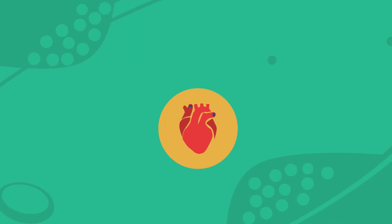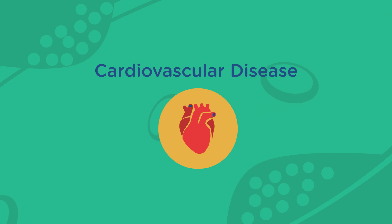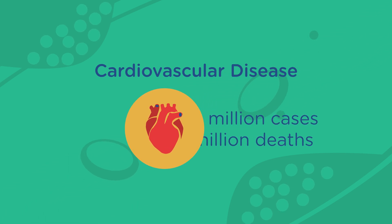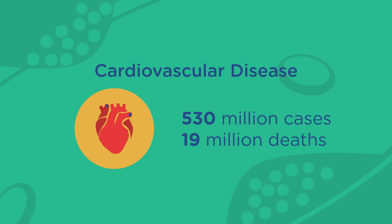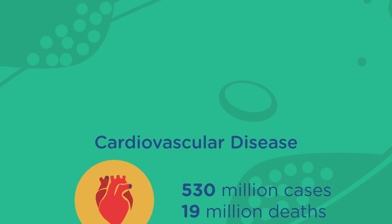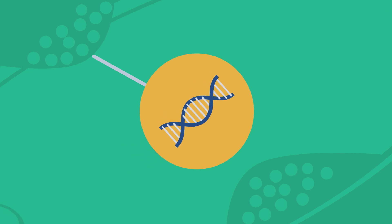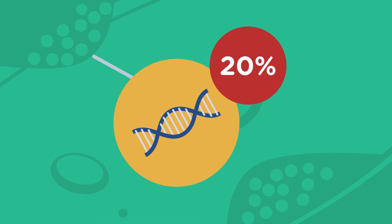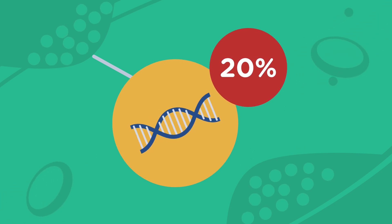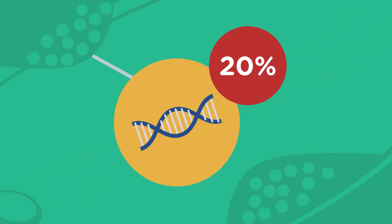Let's look at the example of cardiovascular disease, a group of diseases that affects around 530 million people worldwide and caused almost 19 million deaths in 2019. Advances in research have enabled us to understand the genetic basis of cardiovascular disease, but it has been shown that only 20% of all cardiovascular diseases are attributable to genotype.